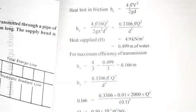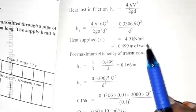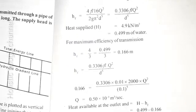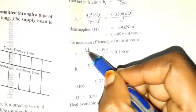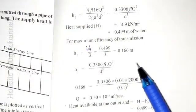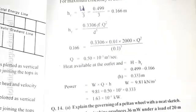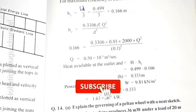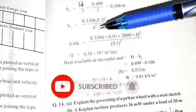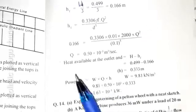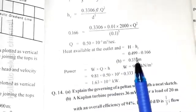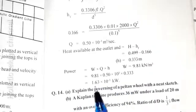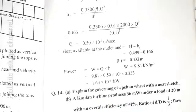Calculating step by step: H = 4.9 kN/m = 0.499 meters of water. For maximum efficiency, H_F = H/3 = 0.499/3 = 0.166 m. So Q = 0.50 × 10⁻³ m³/s. Head available at outlet = H − H_F = 0.499 − 0.166 = 0.333 meters. Power = W × Q × H = 1.63 × 10⁻³ kilowatts.